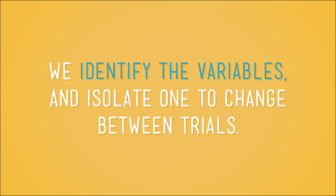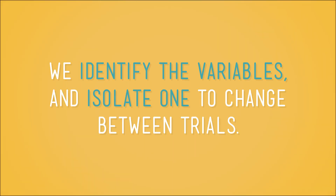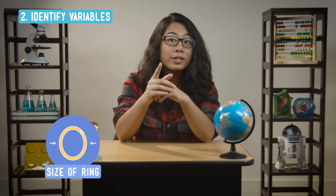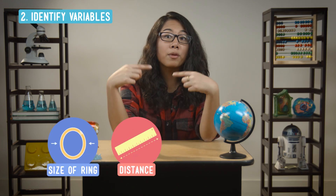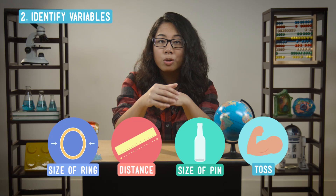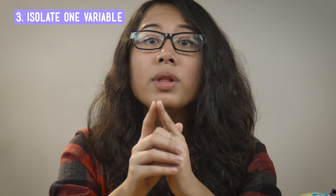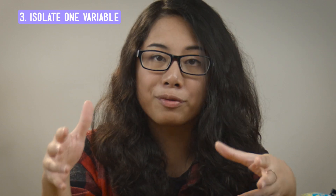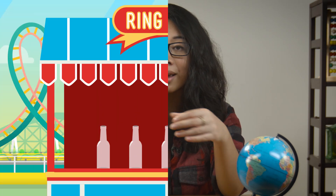Next up, we identify the variables and isolate one to change between trials. The ones we can change are the size of the ring, the distance we stand away from the pin, the size of the pin, and how we throw the ring. We can't do anything about gravity, and there's no wind. So let's say we choose to isolate the size of the ring. We stand the same distance away from the pin, use the same pin each time, and do our best to throw the ring the same way each time.